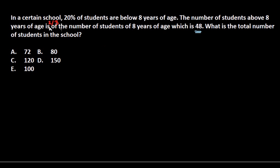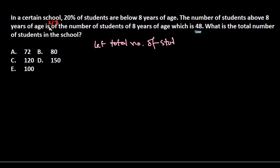Let's solve it systematically. They told us that 20% of the students are below eight years of age. First, let's assume the total number of students in the school as x, since that's what we need to find. So let the total number of students be x. Now, the percentage of students above eight years of age...